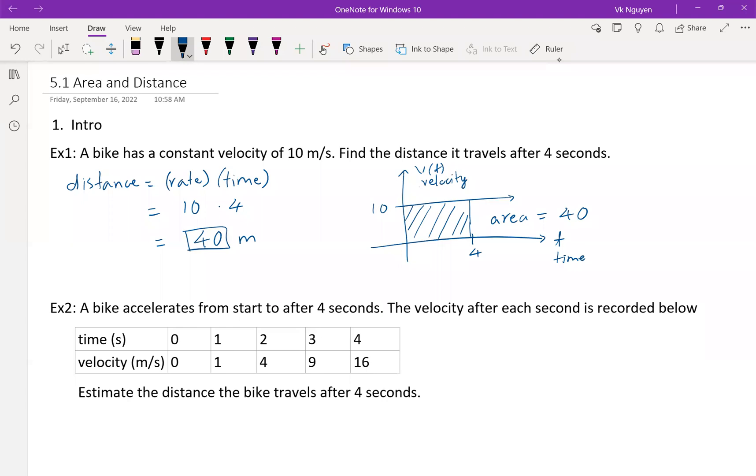A bike accelerates from start to after 4 seconds. The velocity after each second is recorded below. Times in seconds, velocity in meters per second. And we want to estimate the distance the bike travels after 4 seconds.